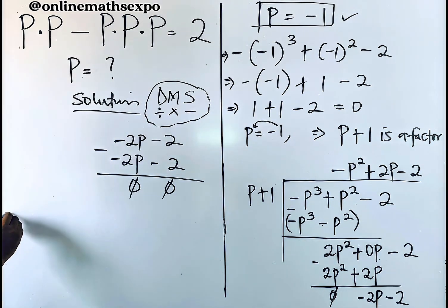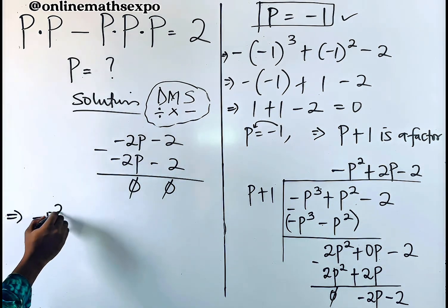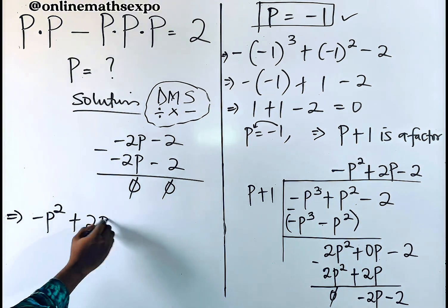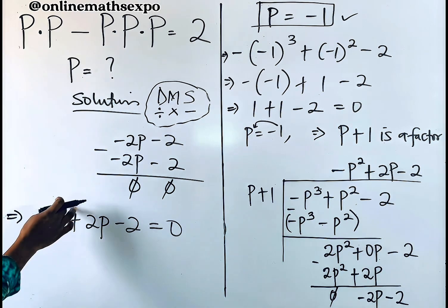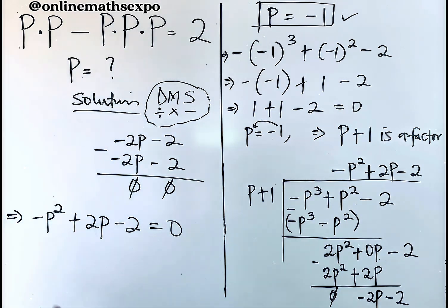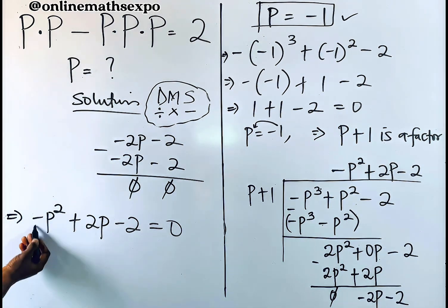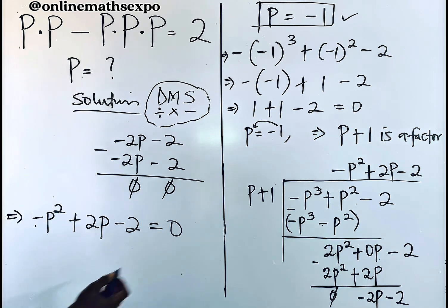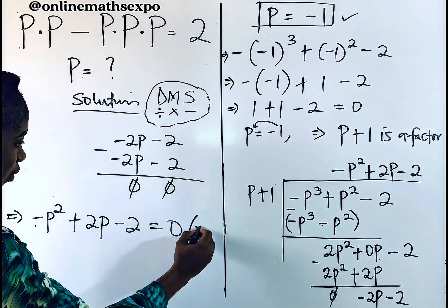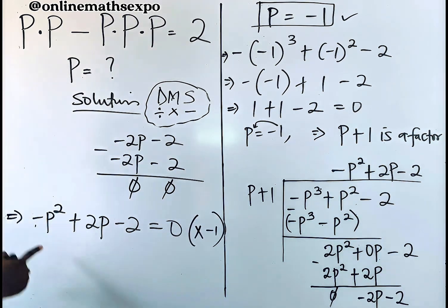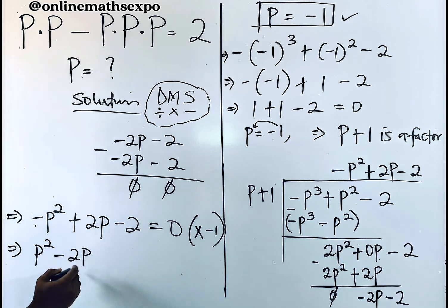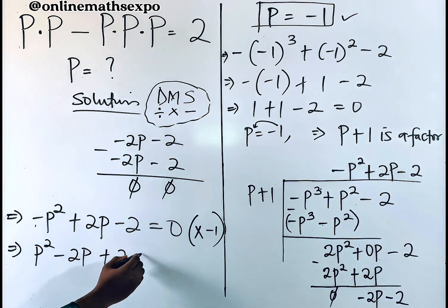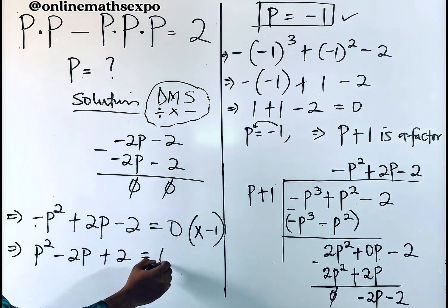Now we solve the resulting quadratic −p² + 2p − 2 = 0 to find the remaining solutions. To clear the negative sign, multiply through by −1, giving p² − 2p + 2 = 0.